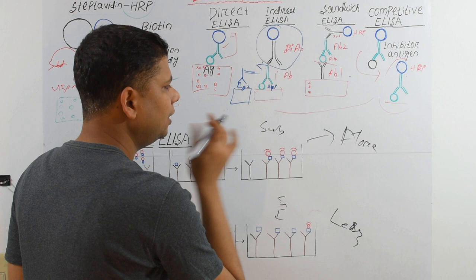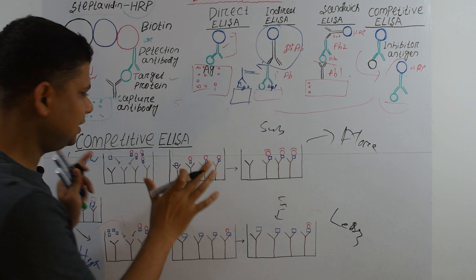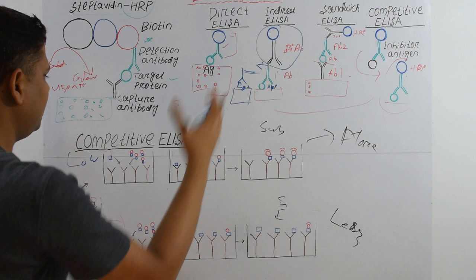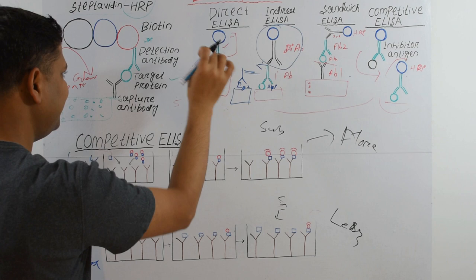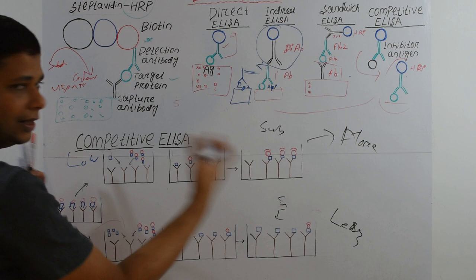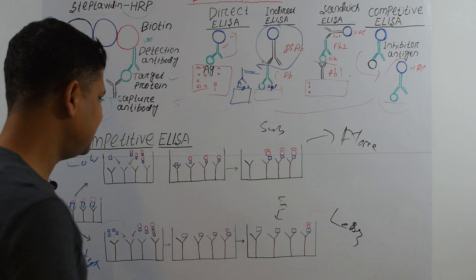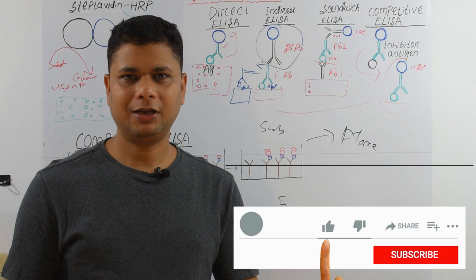Less absorption corresponds to more antigen present, and more absorption corresponds to less antigen — this is the inverse relationship in Competitive ELISA. Competitive ELISA can be combined with the other types: fix antigen then add antibody, or fix antibody then add antigen. All advantages and disadvantages of the combined ELISA type apply. If you liked these videos please share them and subscribe to my channel — thank you, bye bye.